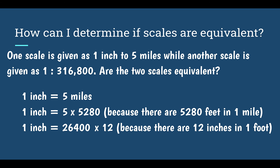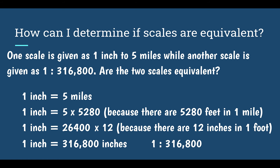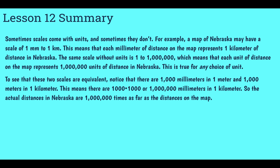Now I multiply by 12 because there are 12 inches in one foot. Multiplying 26,400 by 12 gives 316,800 inches. This results in a scale of one inch equal to 316,800 inches. Comparing to the scale of one to 316,800 — one has units and one doesn't, but since the units on the left are the same, we can remove them. That gives us the same thing as the right. Those two are equivalent.